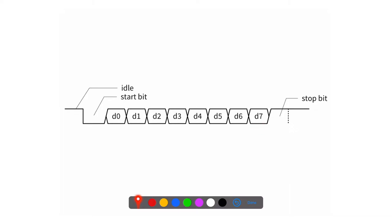At the very end, regardless of the value of D7, the transmitter indicates that it finished sending its data byte by raising the line back to one — that indicates the stop bit or bits. The stop can be one, one and a half, or two bits long, where half means half the period of a normal bit.